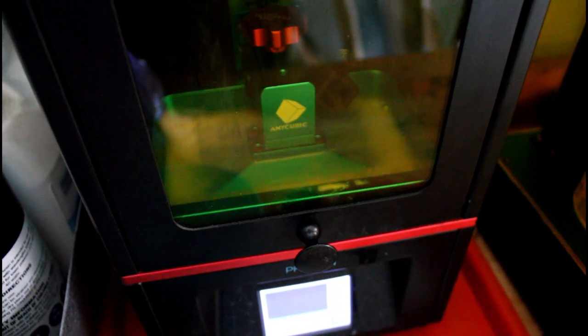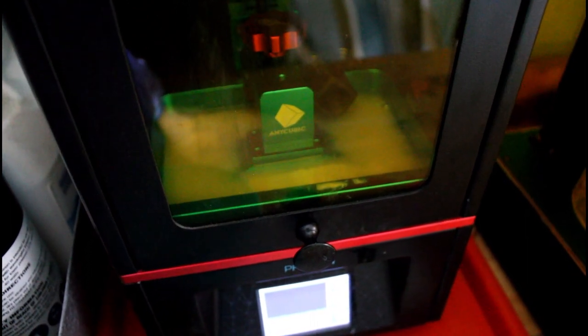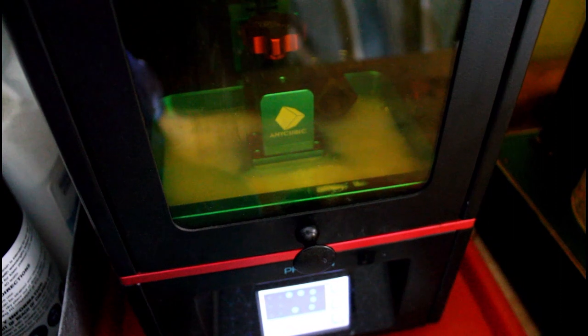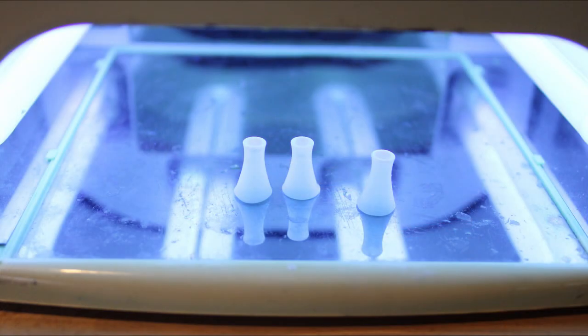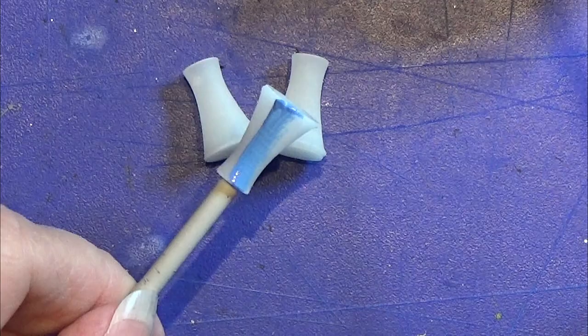Then after printing, I am cleansing the resin print and I am putting it into my UV lamp for around 6 to 8 minutes.